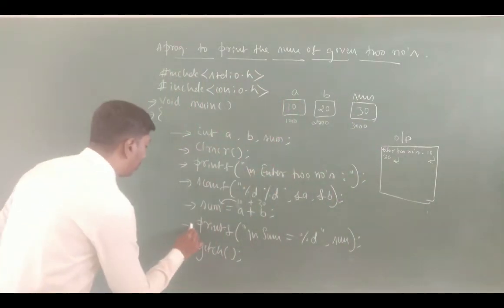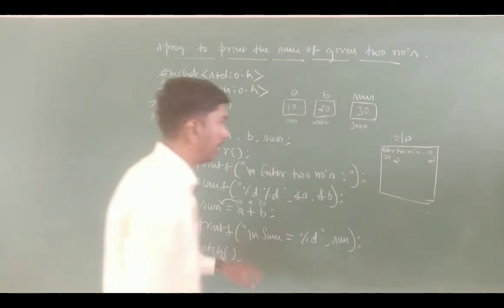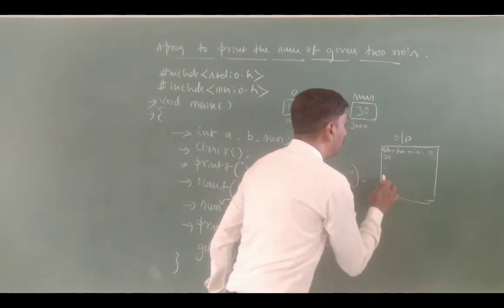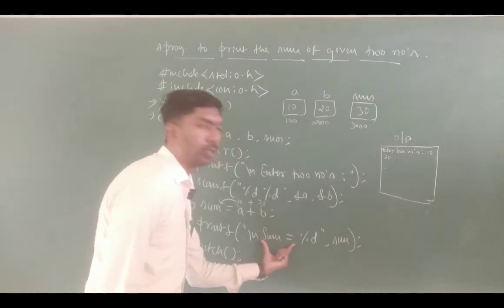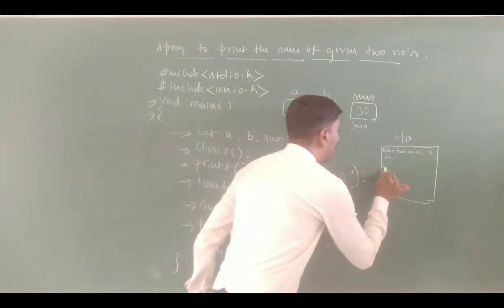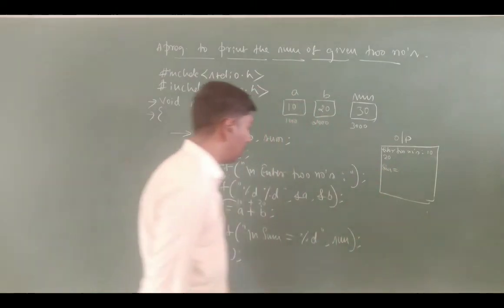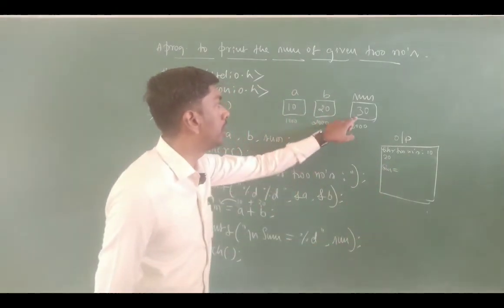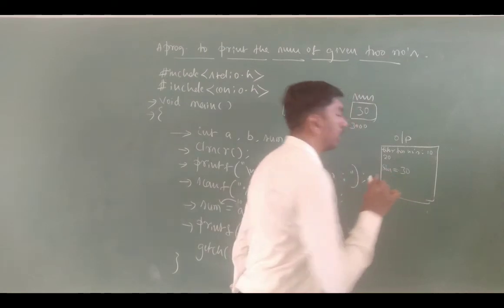Next printf with \n — "sum is equal to %d", sum. Sum is 30, so it displays "sum is equal to 30". This is the display output.